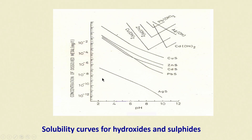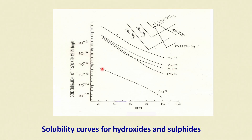Here is a solubility curve for sparingly soluble salts of dissolved metals versus pH. Taking the bottom curve — silver sulphide — around pH 2 the solubility is approximately 10⁻⁶ mg/L (ppm), and as pH increases to about 10, it decreases further, falling to almost 10⁻¹² around pH 10.